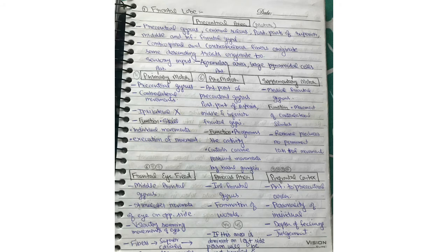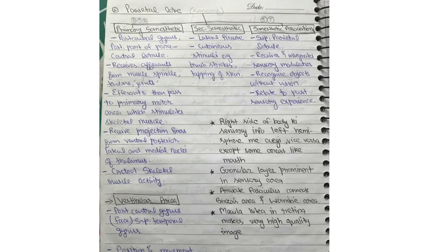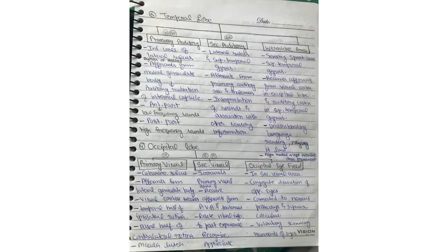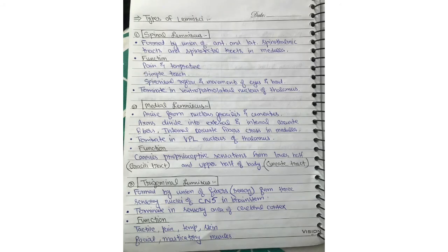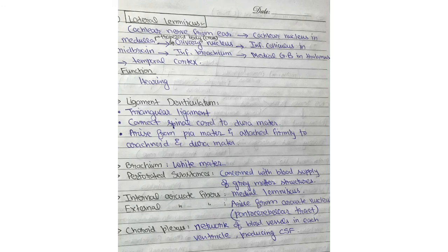For the Brodmann areas and cortical areas, I found that topic very difficult, so I made these notes — you can take a screenshot. What I've done is noted down all the important points from the book in my notes, and every time I had to revise, I'd just take out my notes and revise from there. It saved my time a lot.